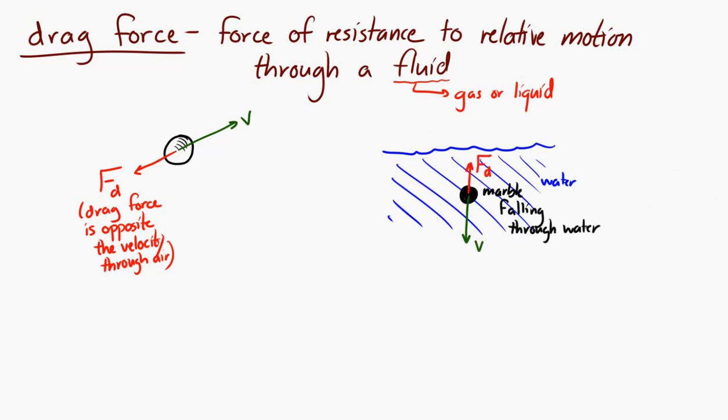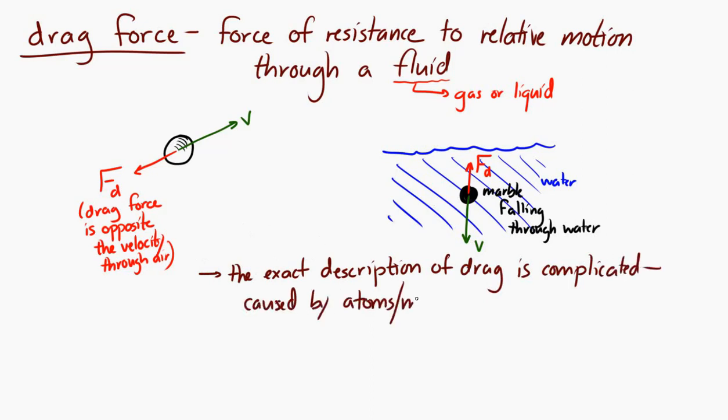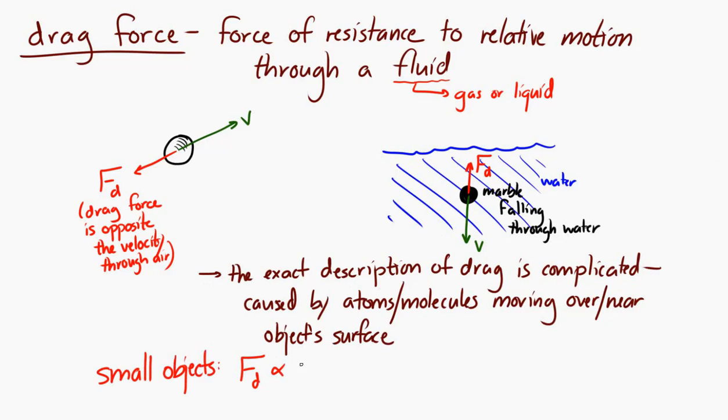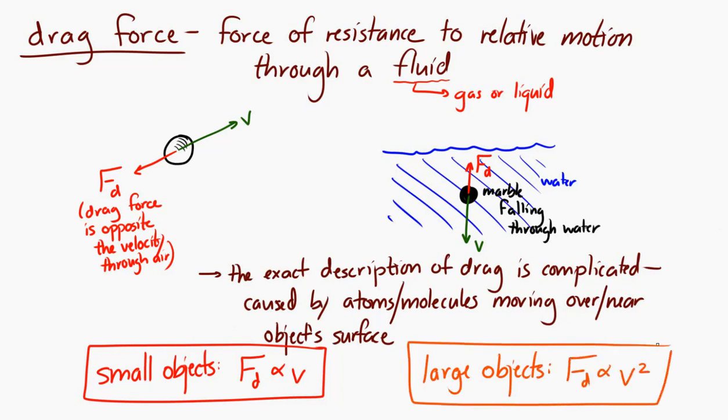Now the exact numerical description of drag is quite complicated. It's caused by the influence of atoms and molecules in a fluid as they move over or near a surface. But what we can say is that for small objects, the drag force is proportional to the speed of the object through the fluid. And for big objects, the drag force is proportional to the speed squared.